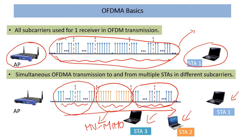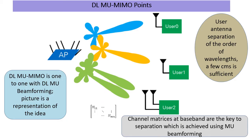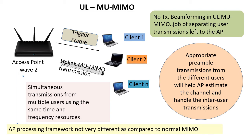Full-bandwidth MU-MIMO means across the full 20, 40, 80, or 160 MHz we are sending simultaneously to multiple users, which involves downlink MU beamforming as shown in a representative figure. This involves feedback, which I've covered in other presentations. Uplink MU-MIMO follows a similar idea — in the full bandwidth everyone uses the entire bandwidth, but users are separated on the spatial stream axis, all of course scheduled via the trigger frame mechanism.